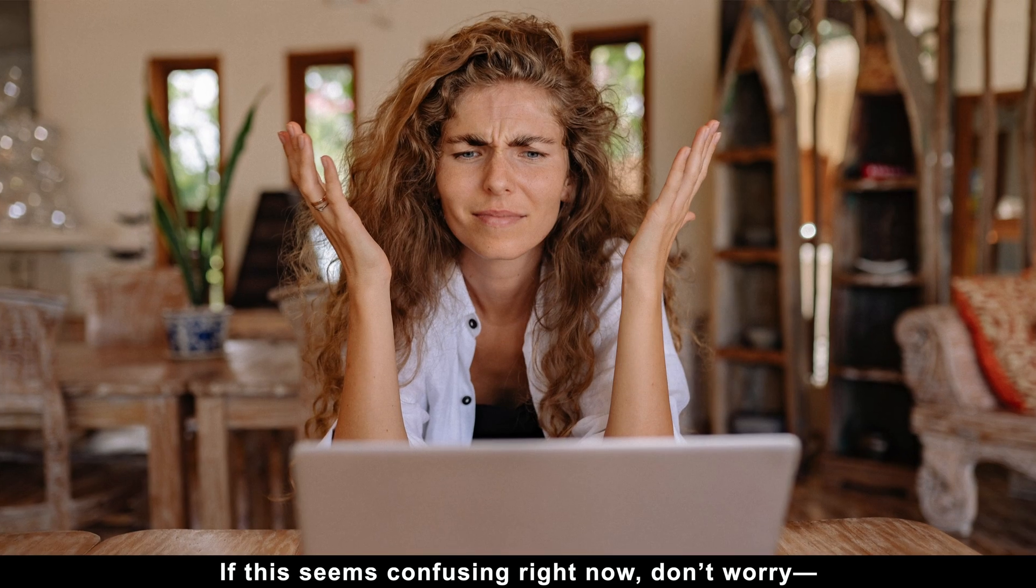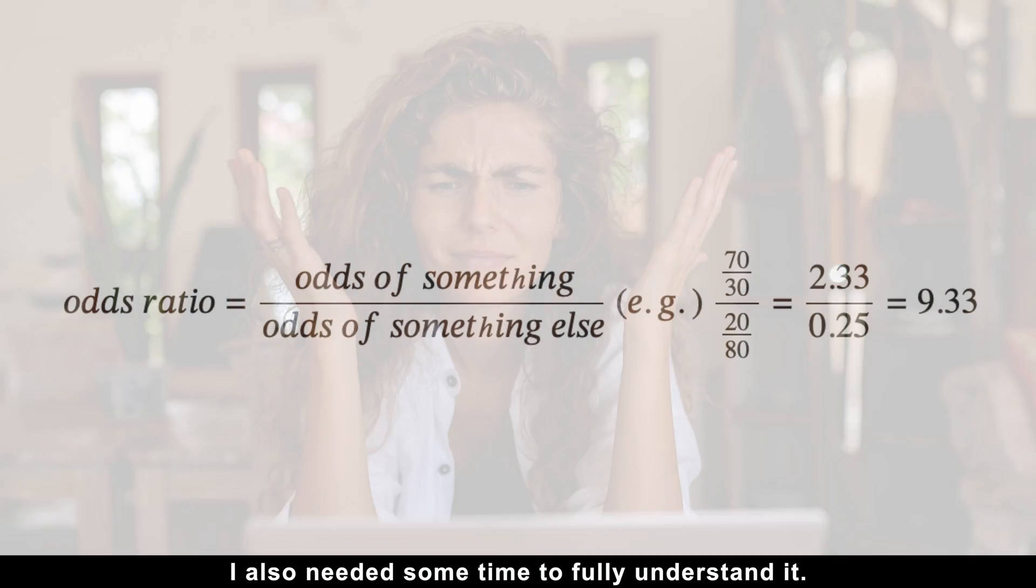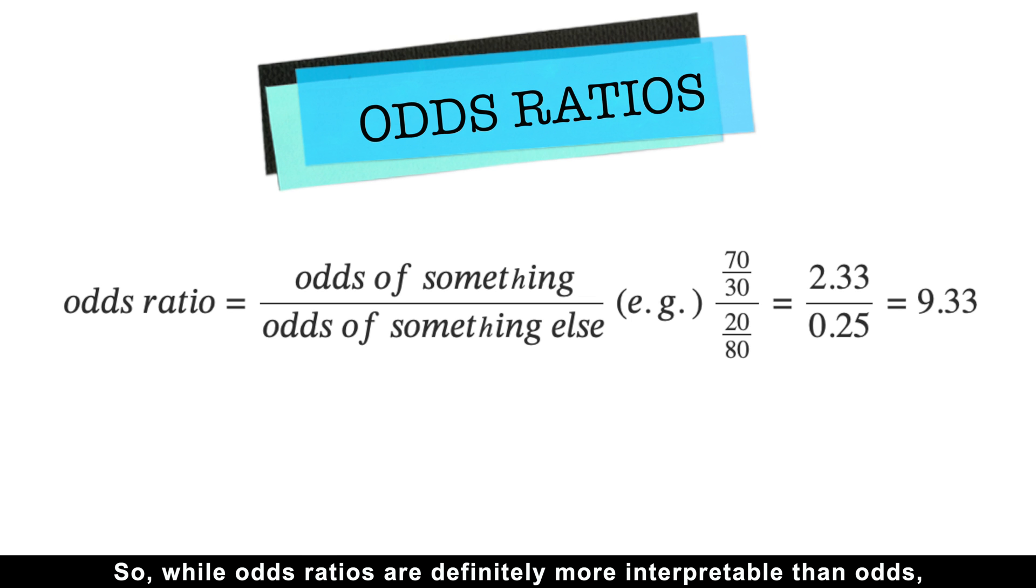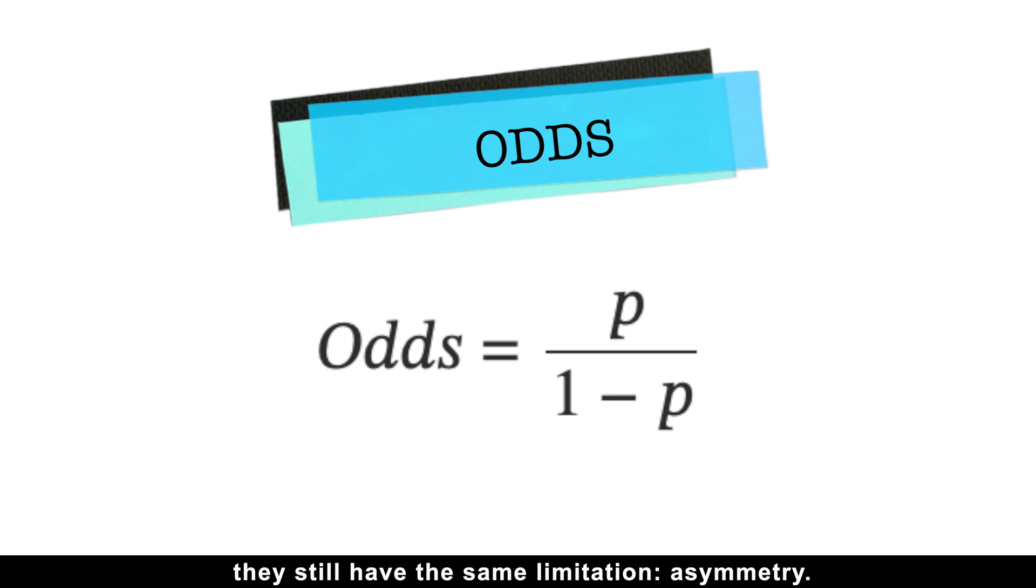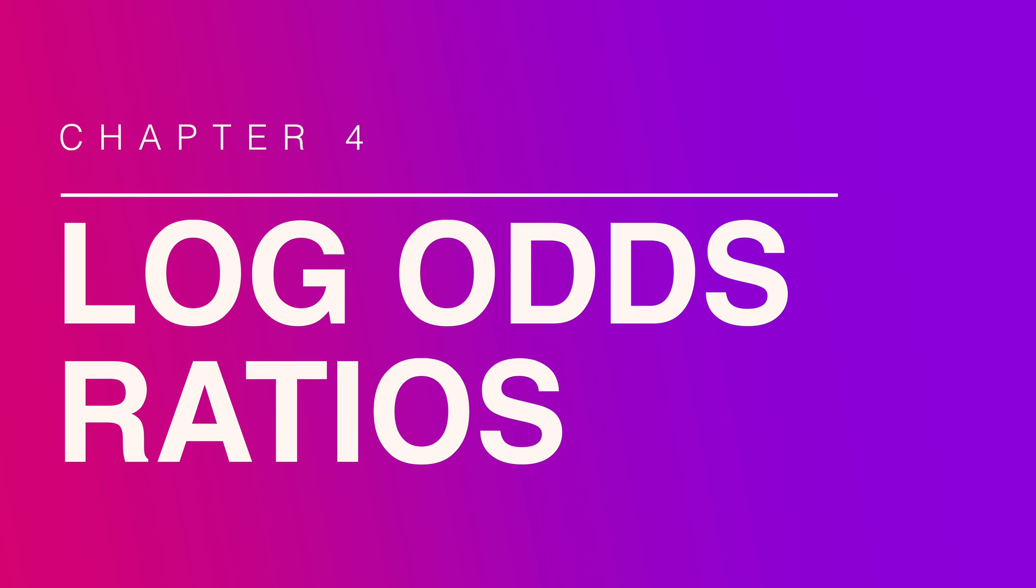If it seems confusing right now, don't worry. I also needed some time to fully understand it. Take a moment to reflect on this example and soon things will become clearer. So while odds ratios are definitely more interpretable than odds, they still have the same limitation: asymmetry. This problem, however, can be easily solved by taking the logarithm of the odds ratios, which improves the interpretability of logistic regression in three major ways.